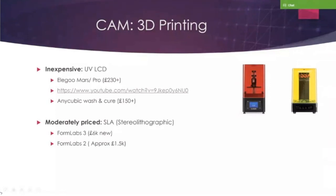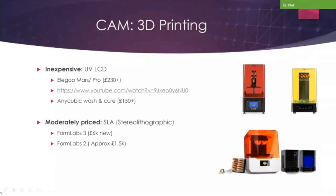That's the cheapest way of getting involved with 3D printing, though you won't really be able to produce large quantities. There are also moderately priced stereolithographic printers. The best known are probably the Formlabs 2 and 3 — the Formlabs 3 is the latest, costing about £6,000 new with the wash and cure. You could pick up a Formlabs 2 second hand for approximately £1,500. I'm personally using the Formlabs 2, and you can see that you can print multiple models, guides, etc. using this system.